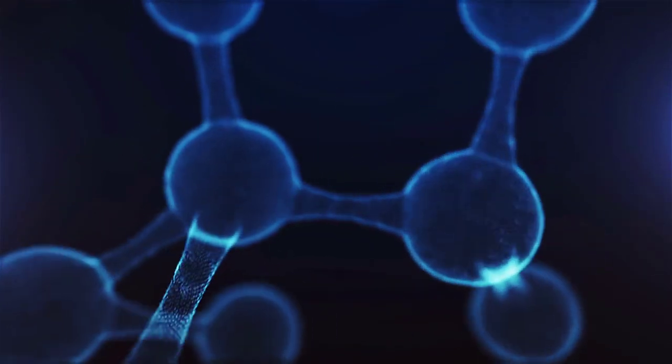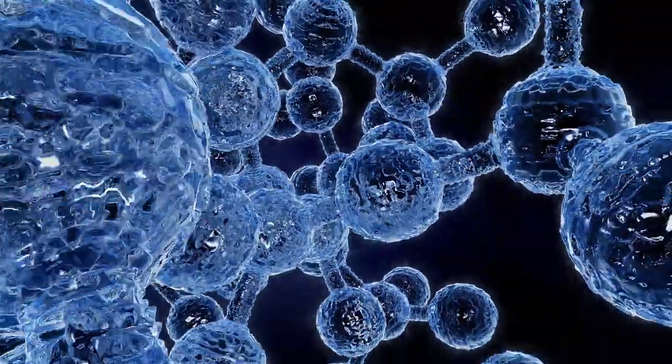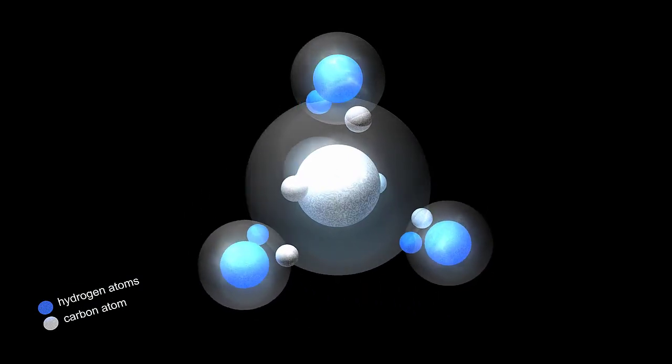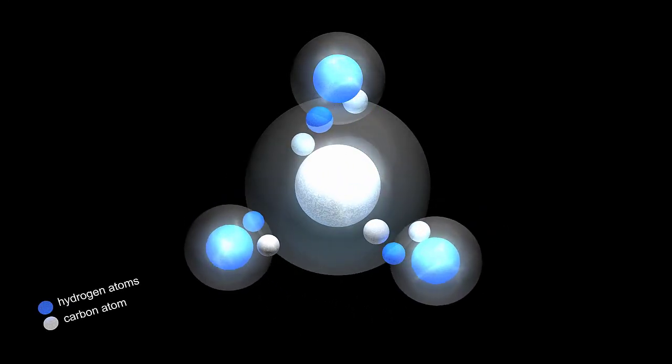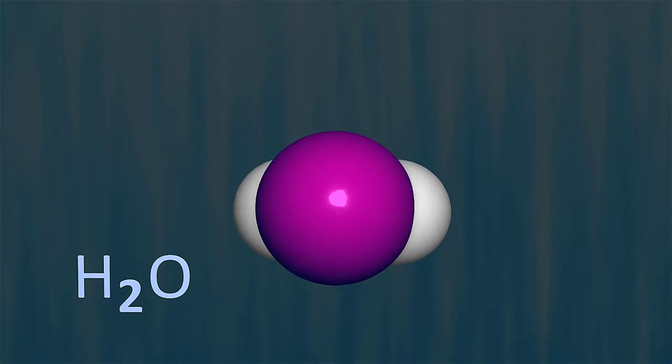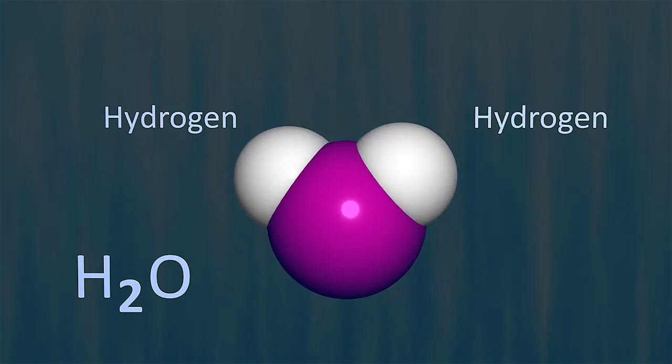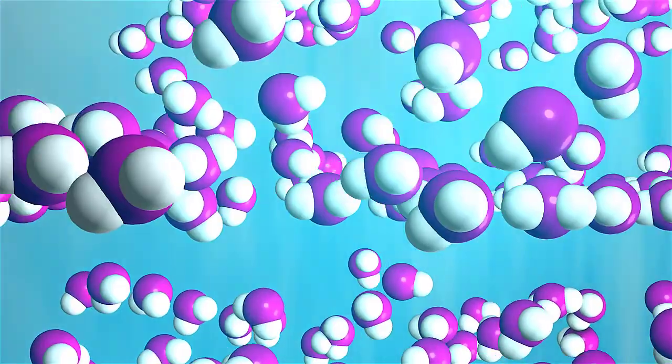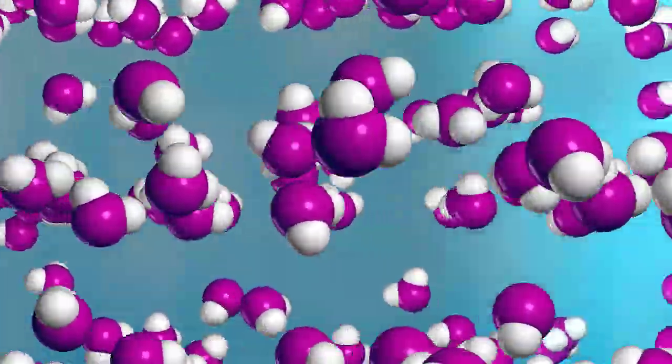In nature, atoms of one element tend to join with atoms of another element in characteristic ways. For example, carbon commonly fills its shell by linking up with four atoms of hydrogen. In doing so, the two elements form the simplest organic molecule, methane, which is also the most abundant and stable carbon-containing compound on Earth. Another example is water. Oxygen needs two electrons to fill its valence shell. It commonly reacts with two atoms of hydrogen forming water. Incidentally, the name hydrogen reflects its contribution to water, hydro meaning water, and gen meaning maker or generator. Thus, hydrogen means the water maker.